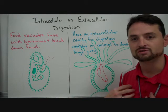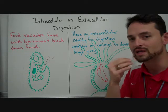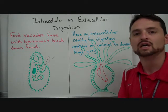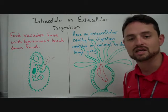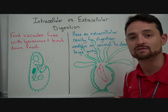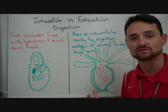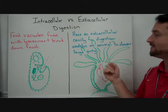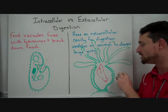In organisms like ourselves, we use extracellular digestion. Even though we think of food going into our bodies, whenever we're eating something through our mouth, we're not putting it into our cells. You could think of the alimentary canal as still outside of the body — in fact, the epithelial lining is the type of tissue that covers outside surfaces. So you have an extracellular cavity for digestion, which enables an animal to devour large prey.